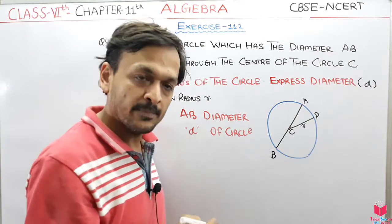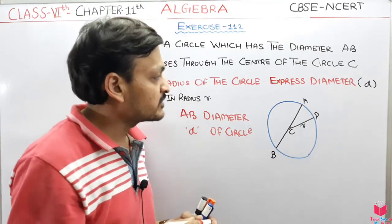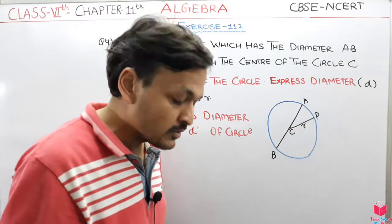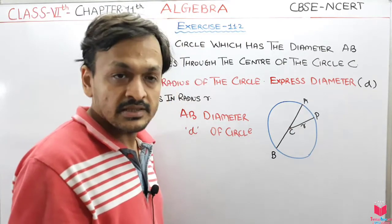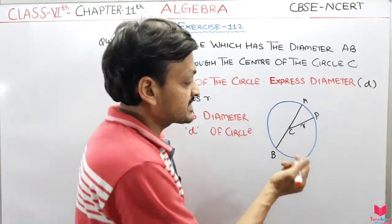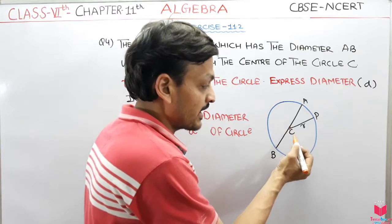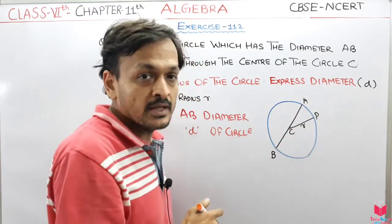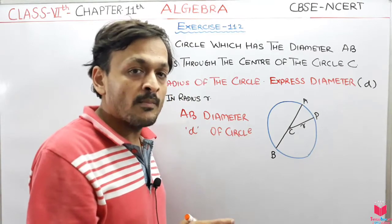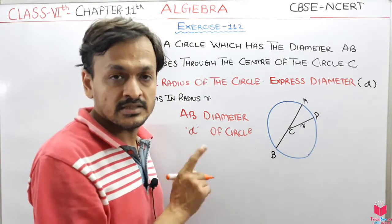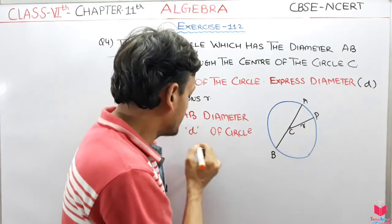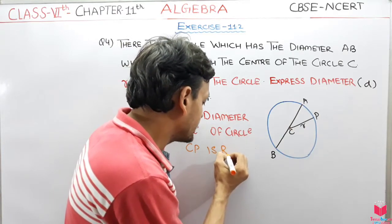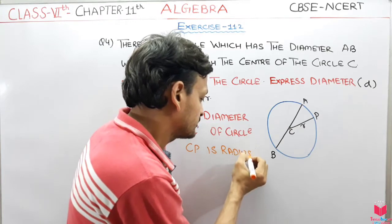ठीक है, D diameter को represent कर रहे हैं। अब उसने क्या कहा कि R is the radius of the circle। Radius क्या होता है हमारे पास? Radius का मतलब होता है कि center से — C से P, यह है Radius R।